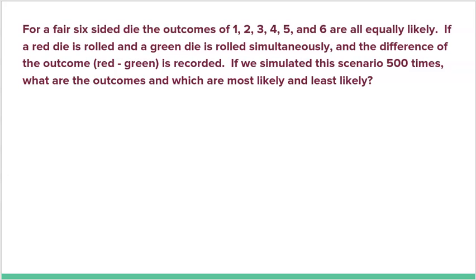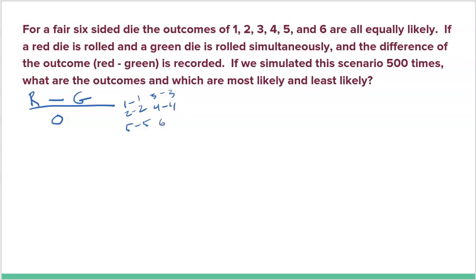Let's start by understanding what outcomes are even possible. We're doing red die minus green die. The difference could be zero — but how many different ways can that happen? The only way you get a difference of zero is if they're both the same: one minus one, two minus two, three minus three, four minus four, five minus five, or six minus six. So there are six different ways to get a difference of zero.